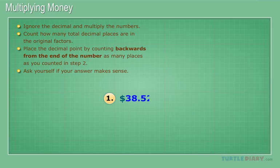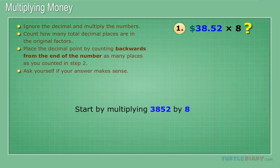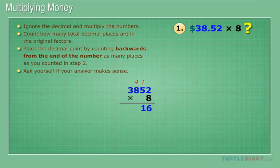Let's try a few. $38.52 times 8. Start by multiplying 3852 by 8. Notice we did not line up the decimals. You only line them up for addition and subtraction.